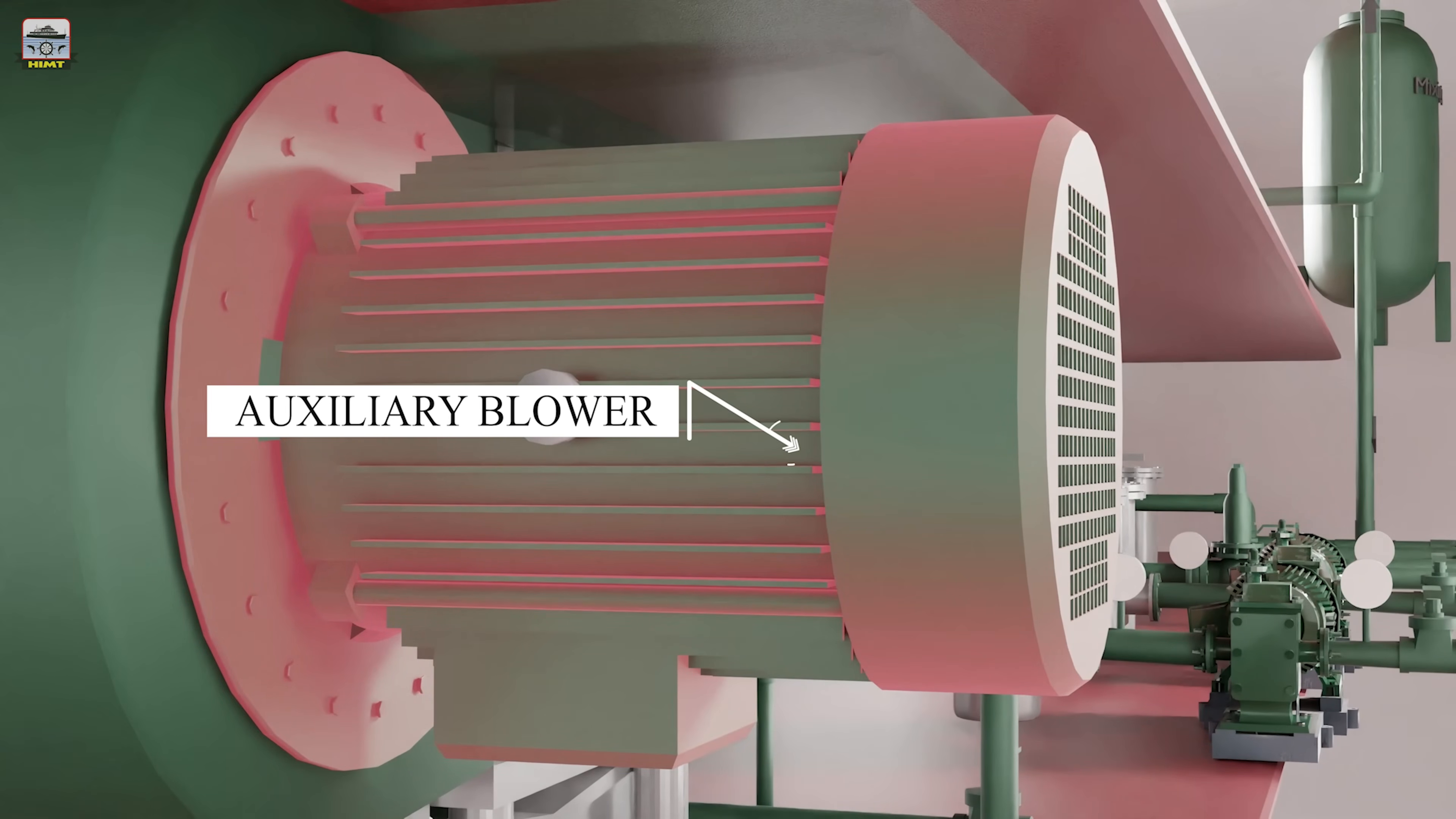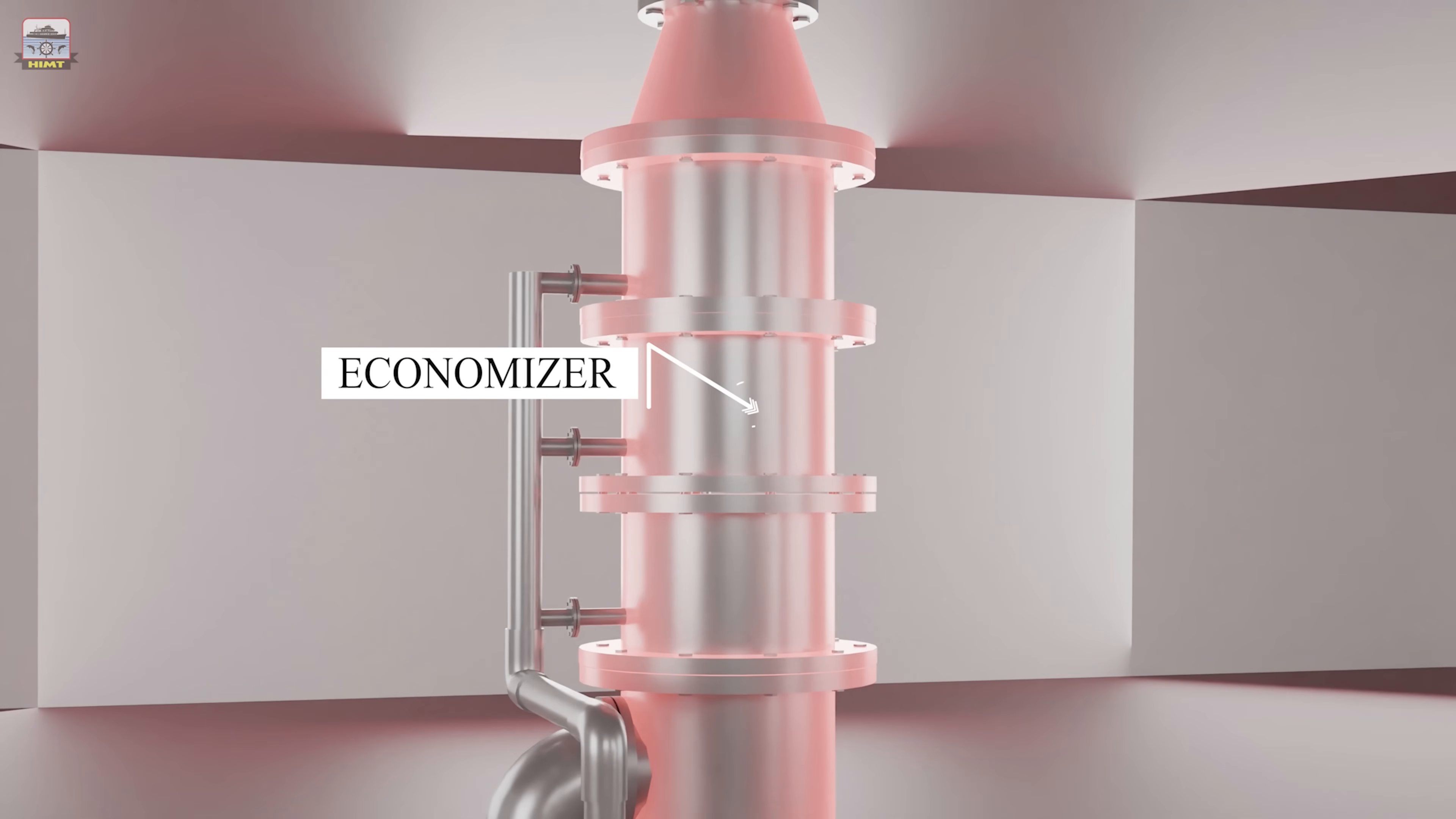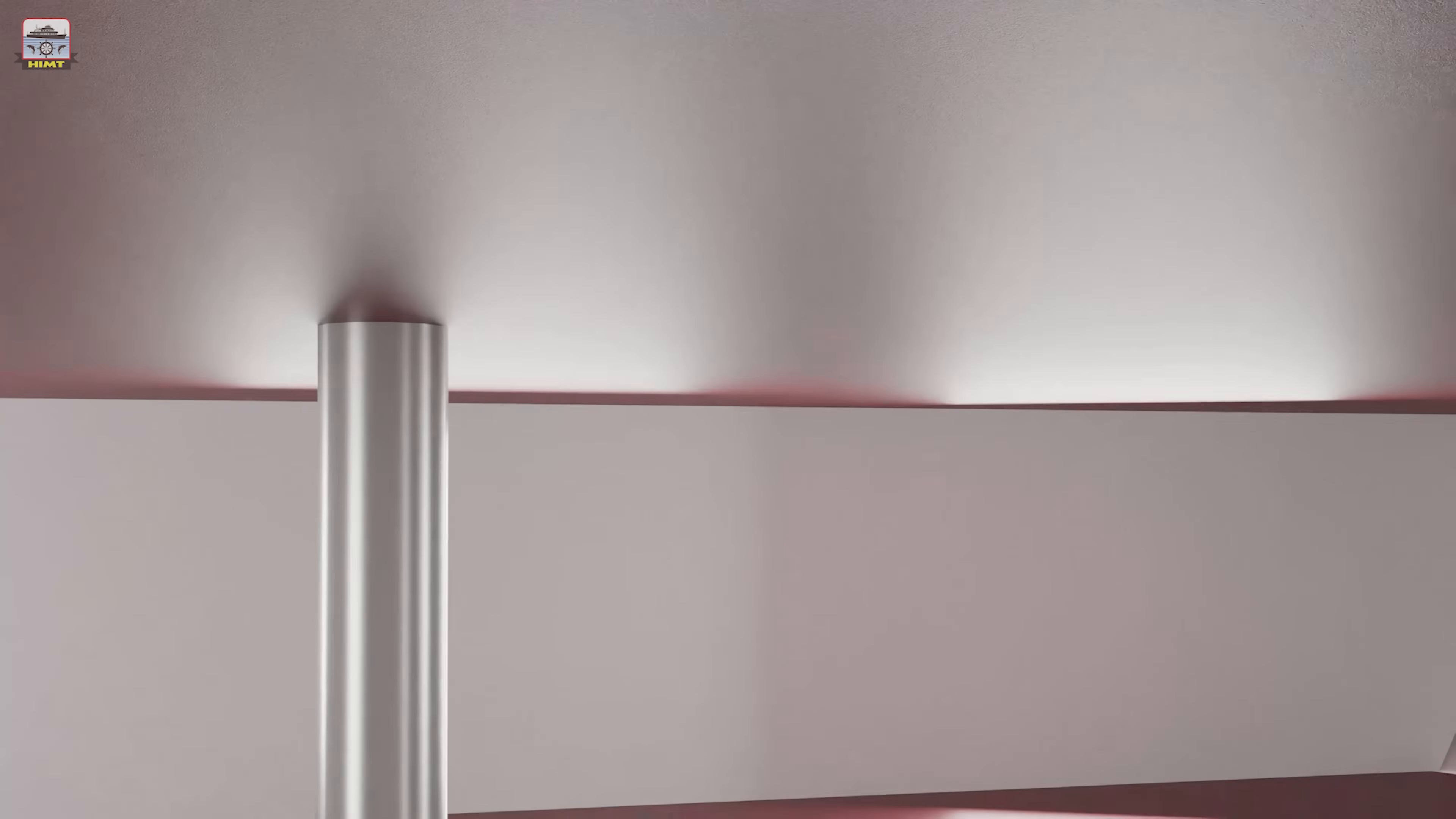The auxiliary blowers are fitted at the ends of the scavenge manifold to supply additional air at low engine speeds as the air supplied by the turbocharger is insufficient at low speeds of the engine. The exhaust gases leaving the turbocharger is made to flow through the economizer to recover the waste heat contained in the exhaust gas. After the waste heat recovery process, the exhaust gases are left out to the atmosphere through the chimney.